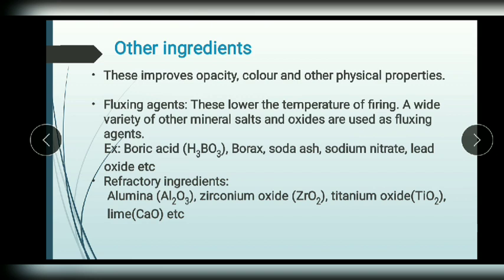Along with these, other ingredients such as fluxing agents and refractory materials are added during the manufacturing of ceramics to improve the opacity, color, and other physical properties. Fluxing agents lower the temperature of firing; substances like boric acid, borax, soda ash, and lead oxide are used as fluxing agents. Refractory ingredients like alumina, zirconium oxide, titanium oxide, and lime are used to increase the capacity of the ceramic material to withstand high temperatures.